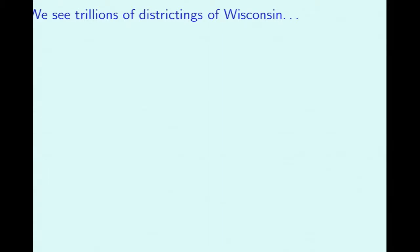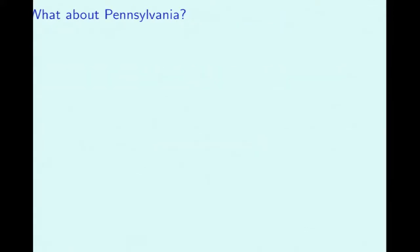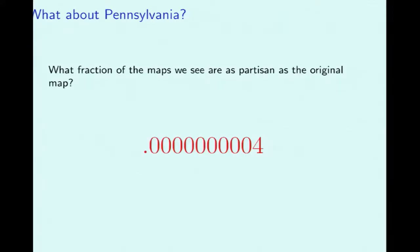Let's look at results for Wisconsin. When we do this, we see trillions of districtings of Wisconsin, and for each one we evaluate whether it's as Republican-leaning as that first map. The fraction of those trillions that are as Republican-leaning as the first map is about 200 millionths. For Pennsylvania, it's similar — about four ten-billionths. So some tiny fraction of the maps in our run are as bad as that first map.